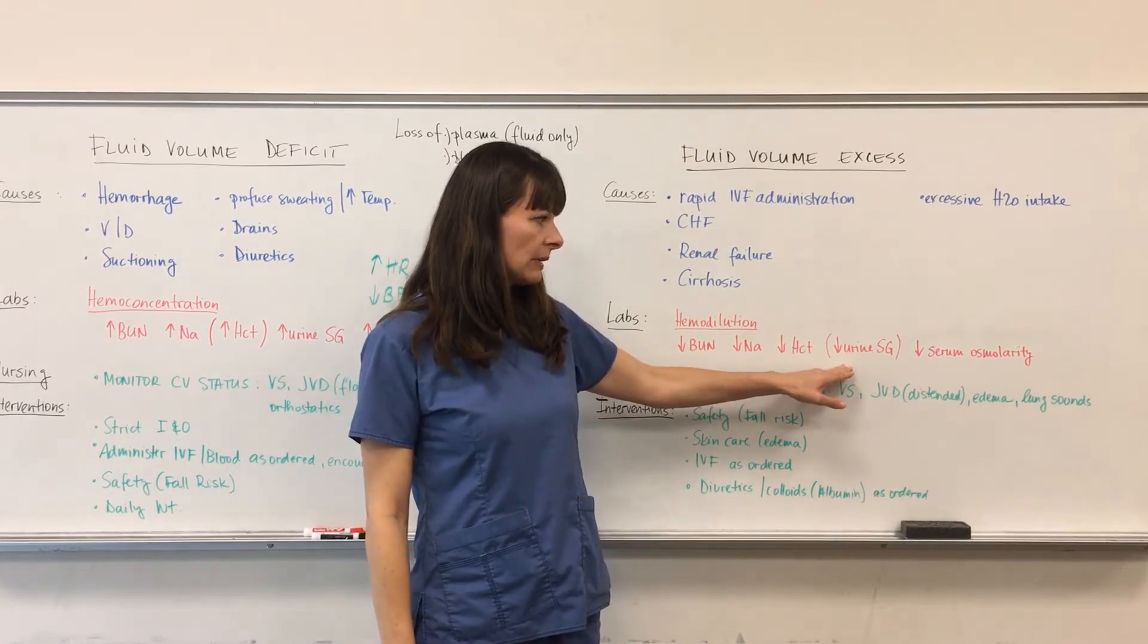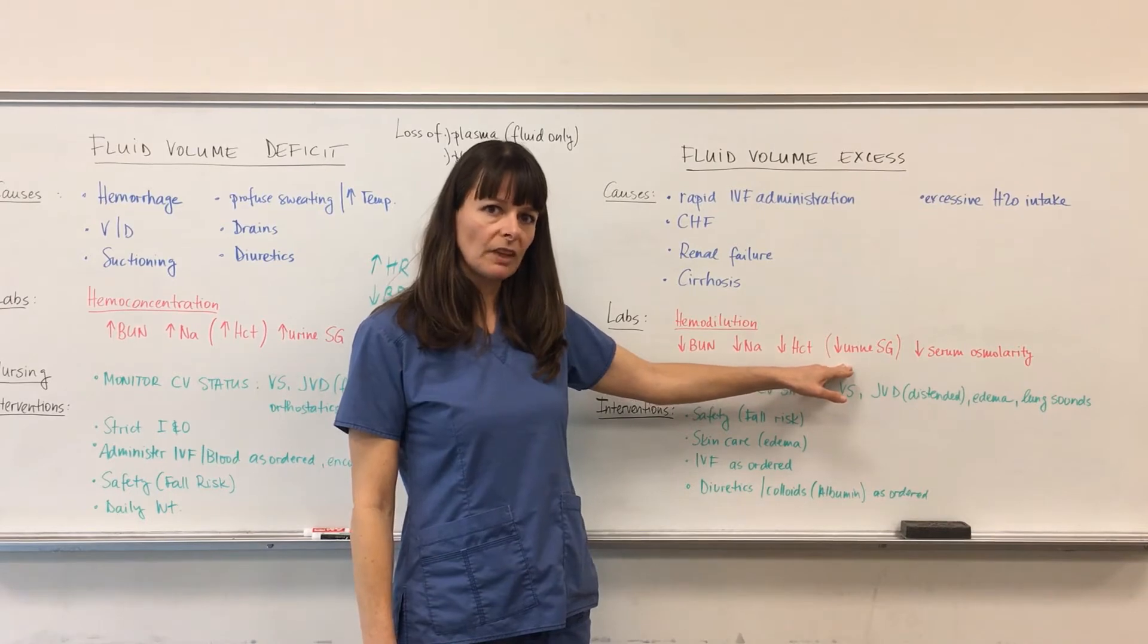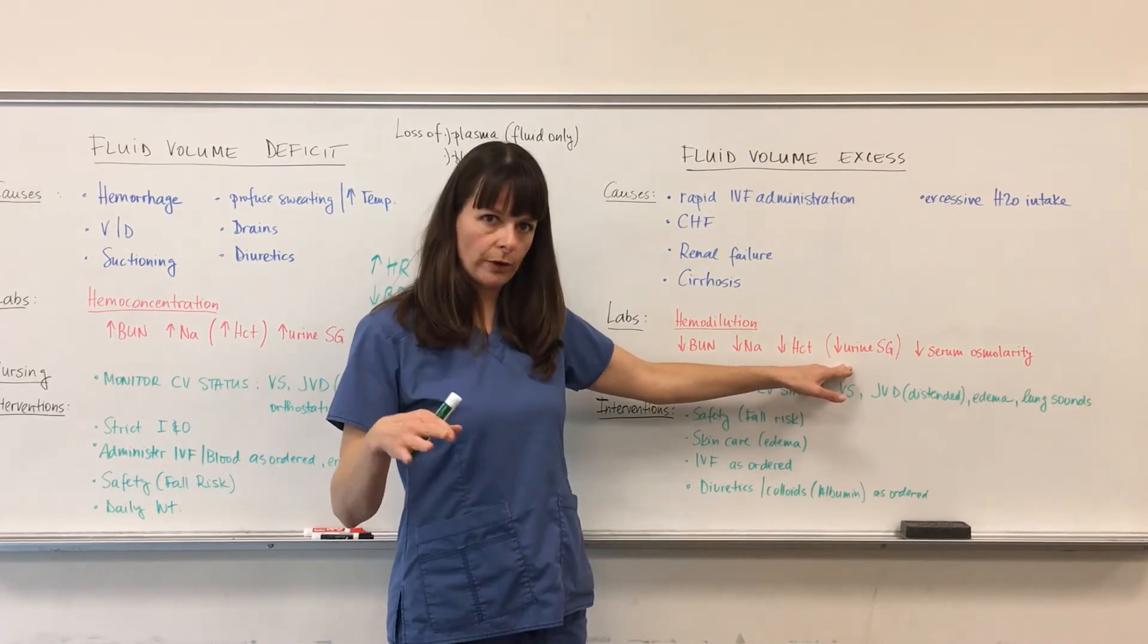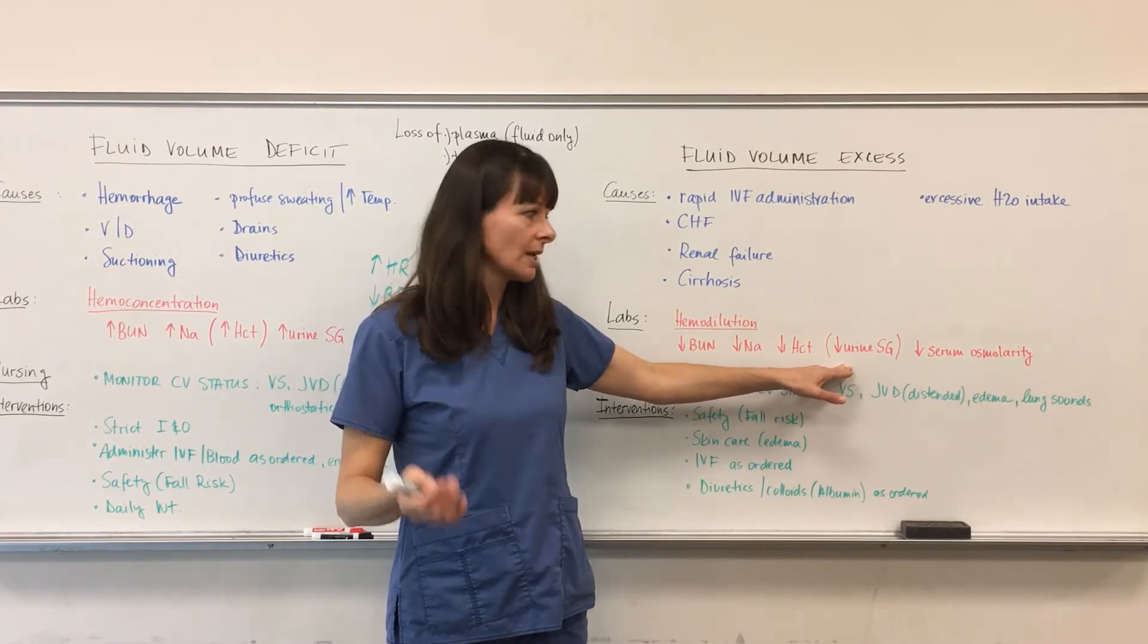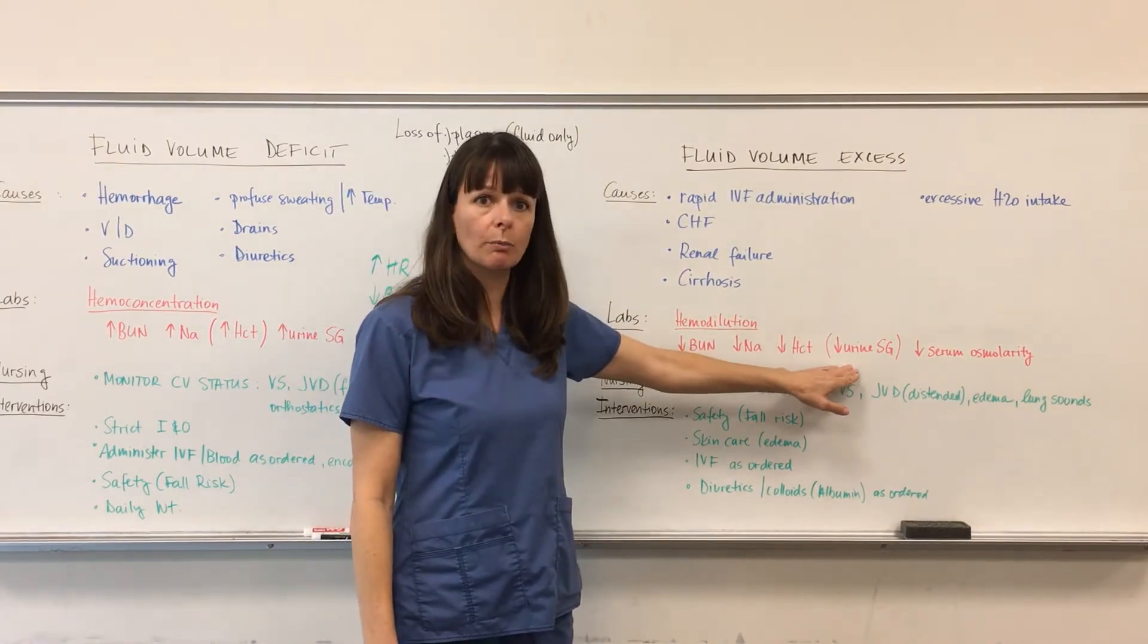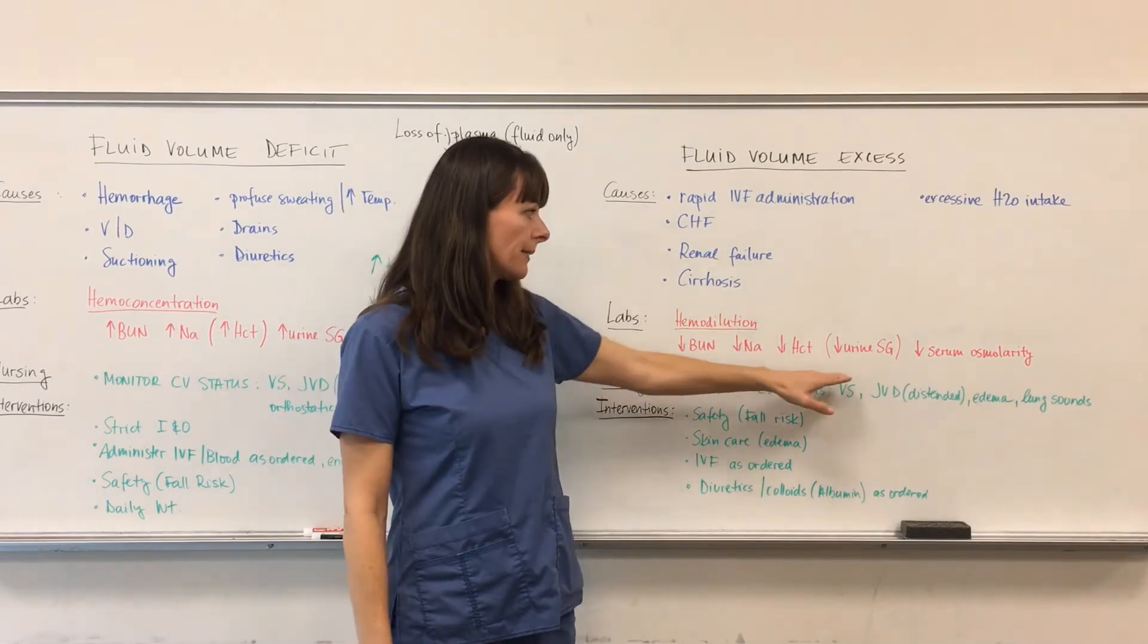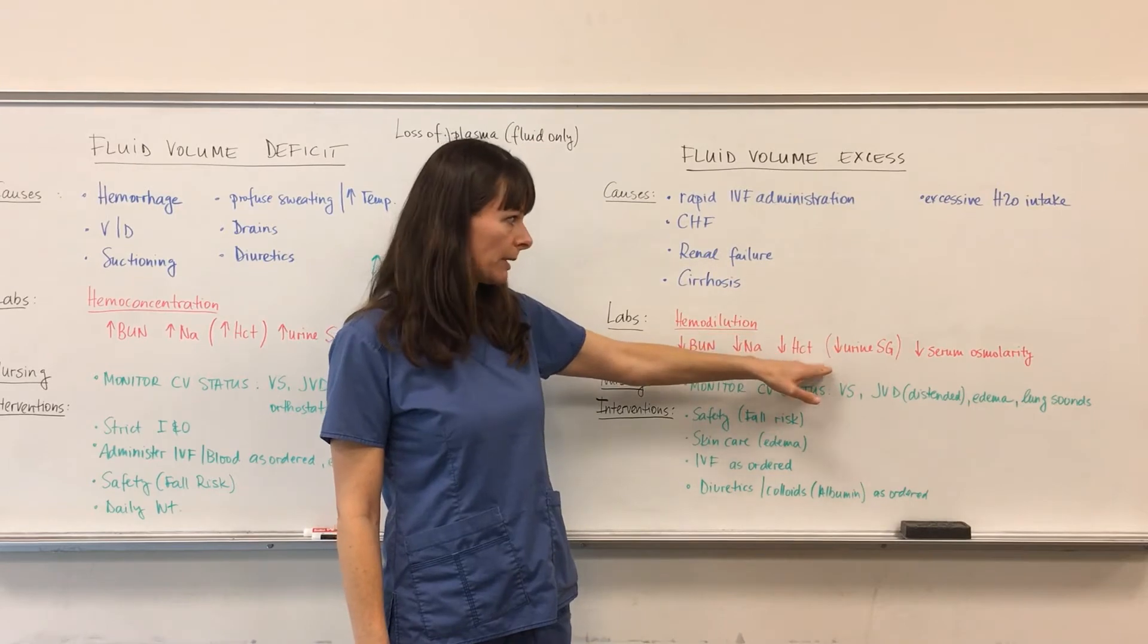And then urine specific gravity. Again, I wrote this in parentheses here because typically when there's fluid volume excess, the kidneys will get rid of more fluid, hence the urine will be more dilute. But if there's renal failure, the kidneys are not working, so this is not going to apply because the kidneys are not going to be able to filter. And then the urine specific gravity might be normal or it might actually be a little bit high.